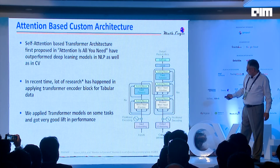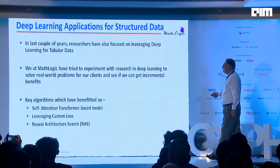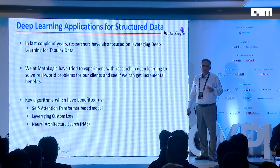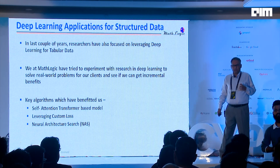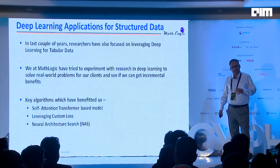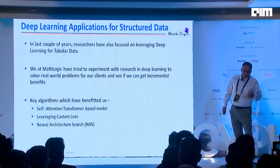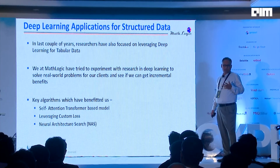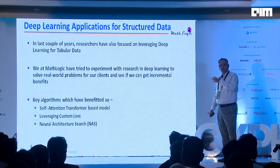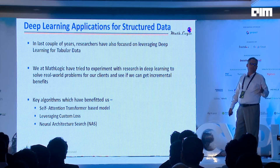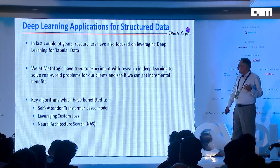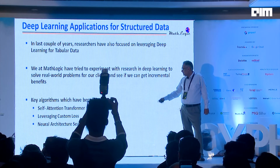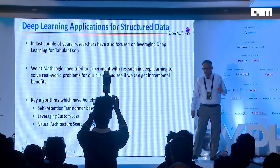We have focused on deep learning on tabular data for the last couple of years, and our endeavor has always been from research to practice. Around 30 to 40 percent of our time goes in research — we read papers, sometimes we understand, sometimes we don't, and we implement in production to see how we can apply it to real-life problems and get state-of-the-art results. What we are going to talk about today is self-attention, some custom loss functions, and neural architecture search.